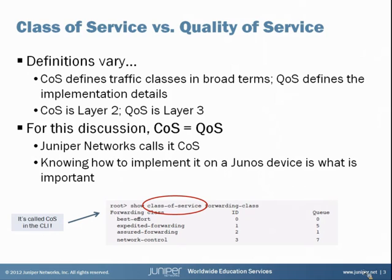Juniper Networks calls it QoS or class of service. What's important here is how to implement it on a Junos-based device. In the end, the differentiation of the two names really isn't that important.